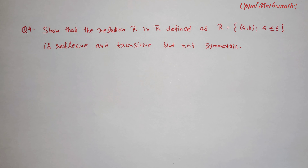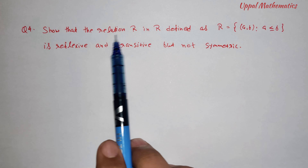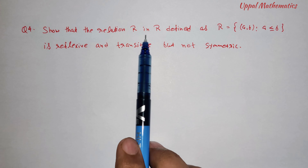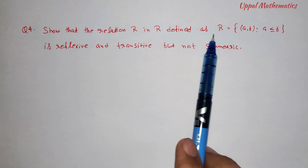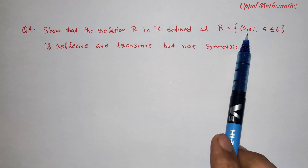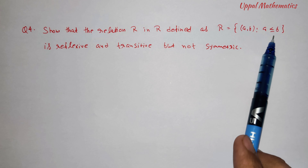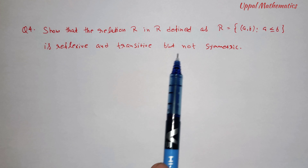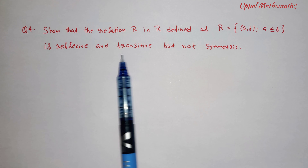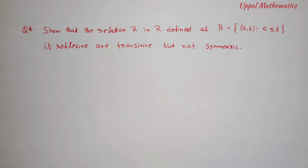Question number 4: show that the relation R in real numbers defined as (A, B) where A is less than or equal to B is reflexive and transitive but not symmetric.